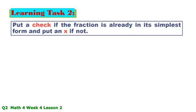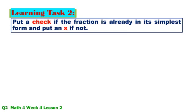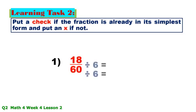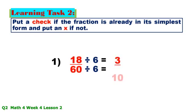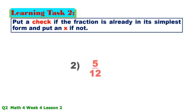Learning Task 2: Put a check if the fraction is already in its simplest form and put an X if not. Number 1: 18/60 — the GCF is 6; 18 ÷ 6 = 3, 60 ÷ 6 = 10, so this is not in simplest form. Number 2: 5/12 — the GCF of 5 and 12 is only 1, so this is in simplest form.